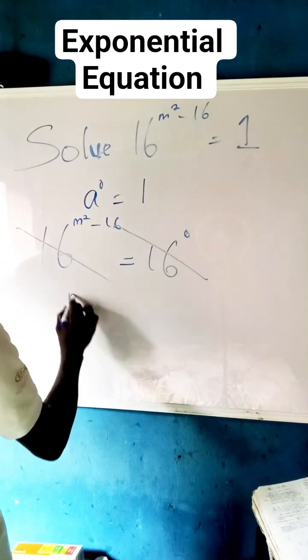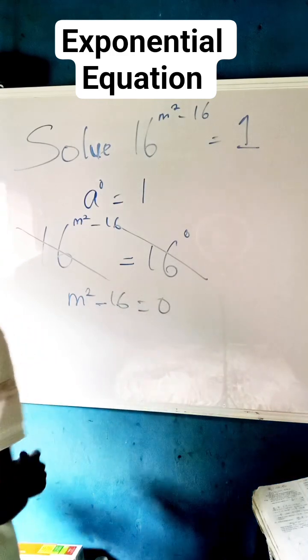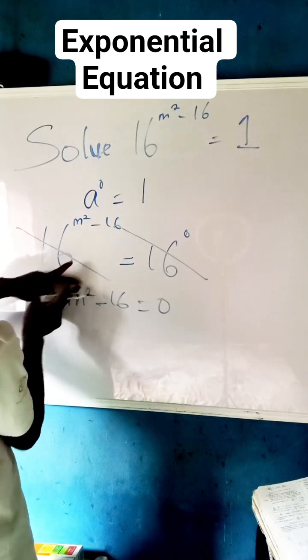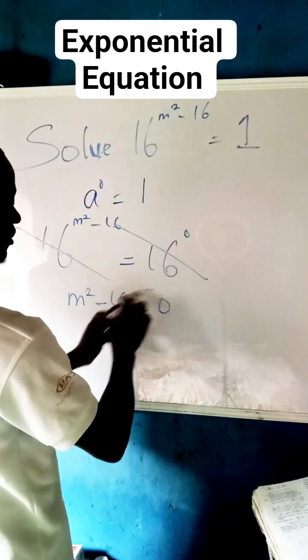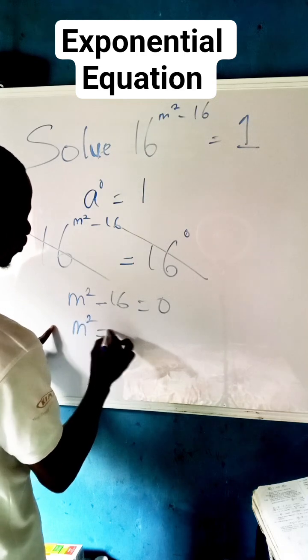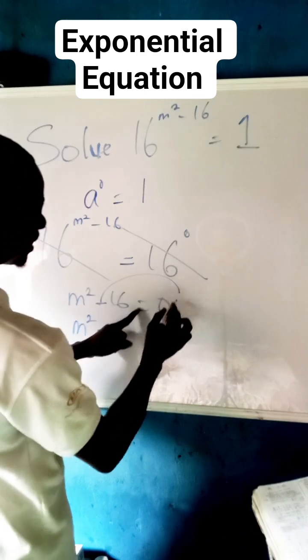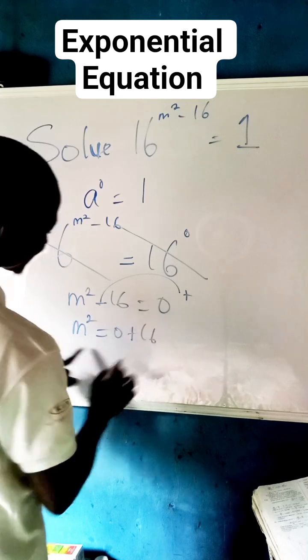Now we can see that we are looking for the value of m, not m squared. Therefore, what you have to do first of all is to carry this to the other side of the equation. Now we have m squared equals to—when this crosses the equality sign, the sign becomes plus. So we now have zero plus 16, so that we now have m squared equals 16.